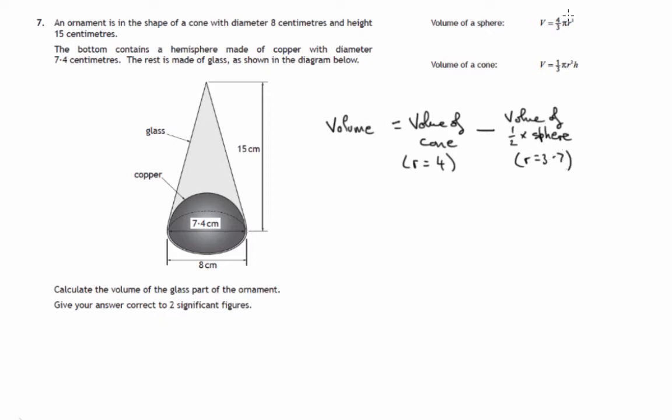You'll notice up here I've put the two volume formulas. You get these given to you in the exam on your formula sheet. The volume of a sphere is 4 thirds pi r cubed. The volume of a cone is 1 third pi r squared h.